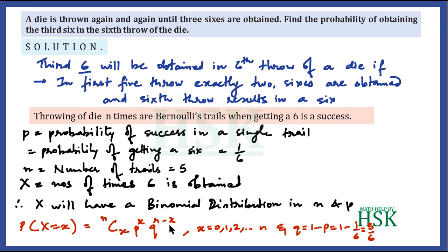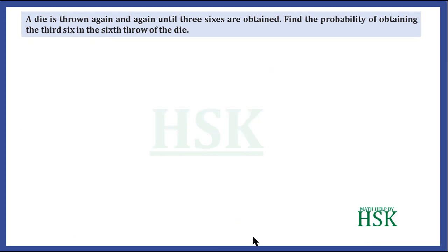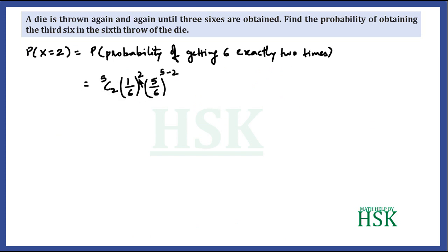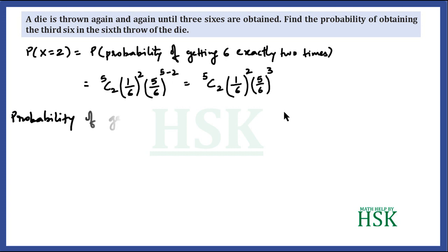The probability of x successes is given by n C x · p^x · q^(n−x), where x can take values from 0 to 5. The probability of x = 2, that is, getting a six exactly two times in five throws, equals 5C2 · (1/6)^2 · (5/6)^3. This simplifies to 5C2 · (1/6)^2 · (5/6)^3, which is the probability of exactly two sixes in five throws.